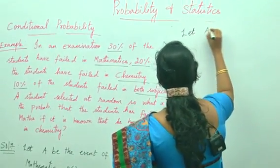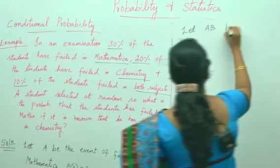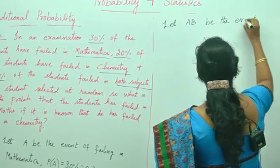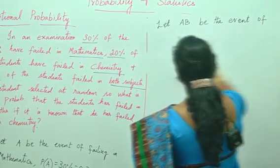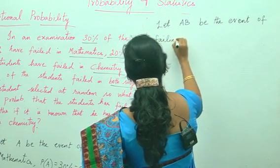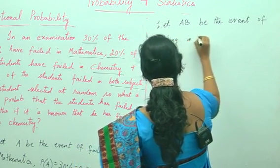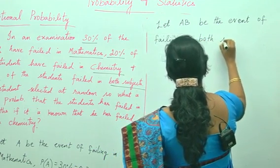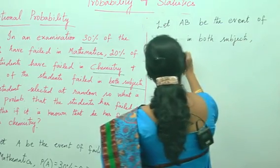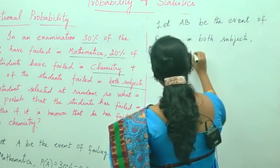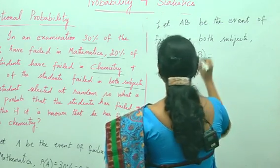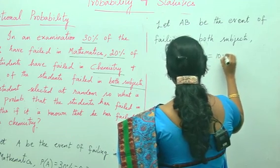Let AB be the event of failing in both the subjects. That is P of A intersection B equals what they have given, 10%, that is 0.1.